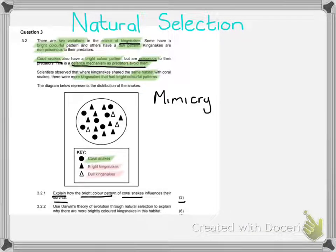And that's how you get your three marks. The second question, 3.2.2, says that we must use Darwin's theory of evolution through natural selection to explain why there are more brightly colored kingsnakes in this habitat. And effectively, what they want you to do now is they want to take that template answer that we can get from our exam guideline from the government. It's online. You can download it. And it's like a template answer. And what I mean by that is it has a very basic outline of how we explain natural selection.